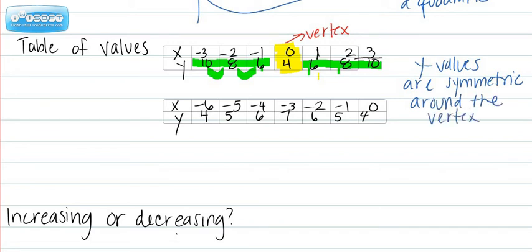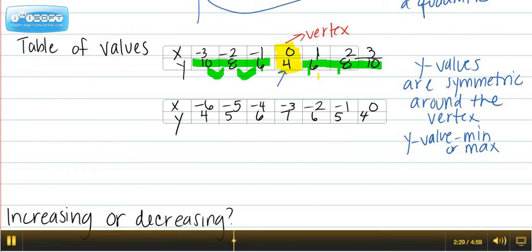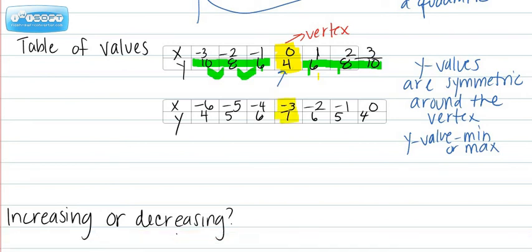And the vertex will always be located where your y value is a minimum or maximum in your table. So notice here my y value is the minimum on the second table. Here would be my vertex because my maximum value is a 7.